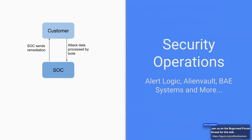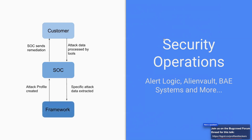So how can we implement offender profiling into security operations? We can latch a framework of offender profiling onto what already exists. We take our logs from the customer as usual, analyze them as usual, but then start bucketing that information — this attack is related to one a month ago, this one to a week ago, and this one is similar to something another customer has experienced. We then send that bucket of information back to the customer along with our normal analysis.